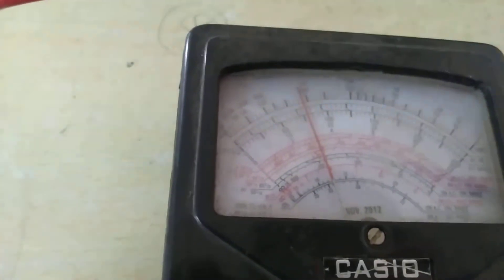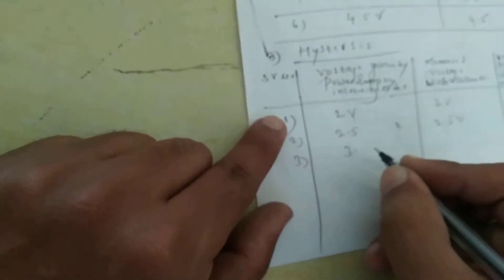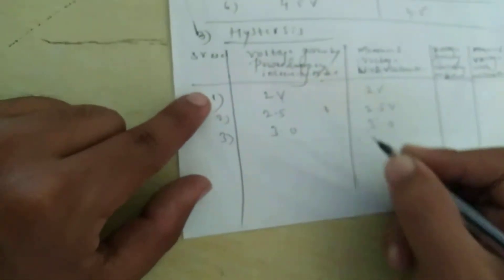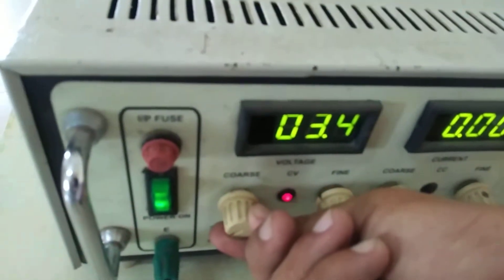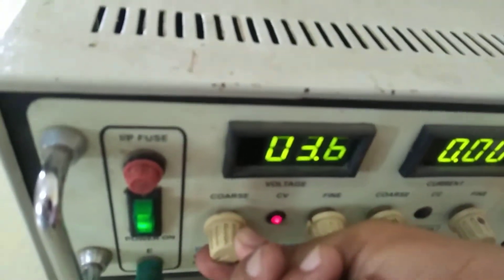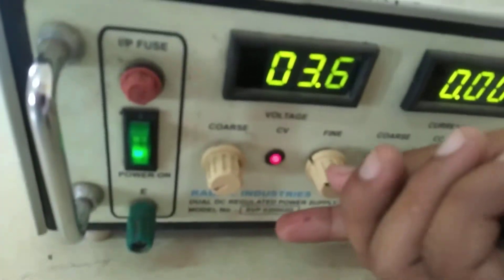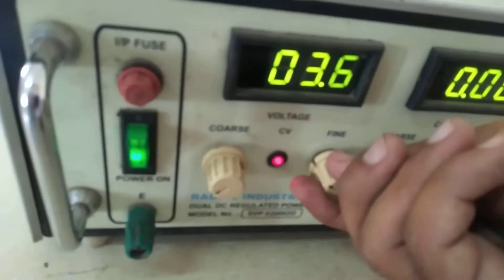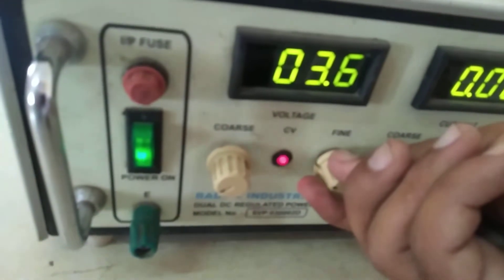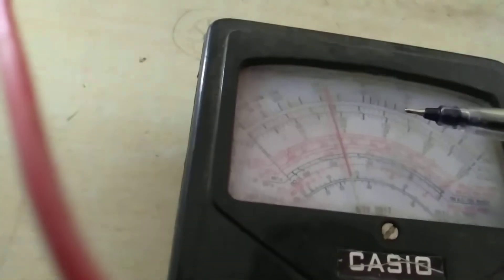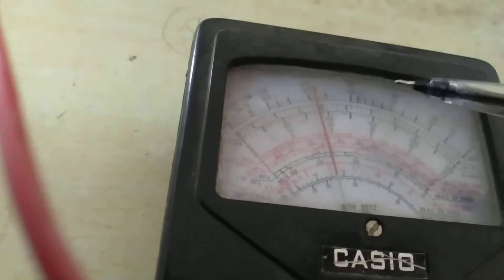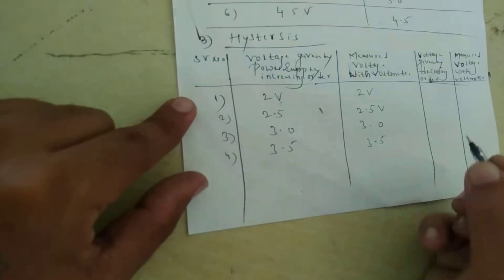The multimeter will respond exactly on 3 — between 2 and 4 on the scale, take the value 3. Next, 3.5 volts — increasing uniformly. So that is hysteresis. The multimeter will respond with 3, 3.2, 3.4 and 3.6 in between. Take exactly 3.5.